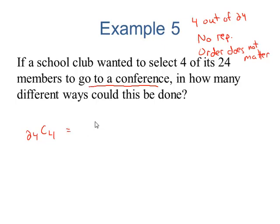24 C 4. The numerator is 24 factorial. The denominator is 4 factorial times the difference of these two, 20 factorial. I want to break the 24 factorial down so that it ends with the larger factorial in the denominator.